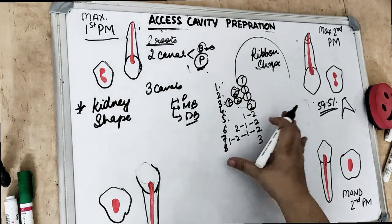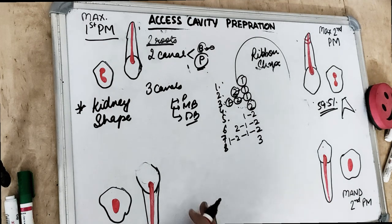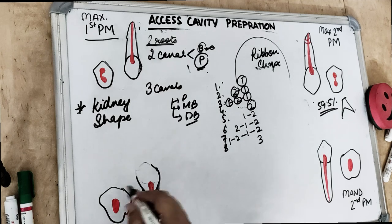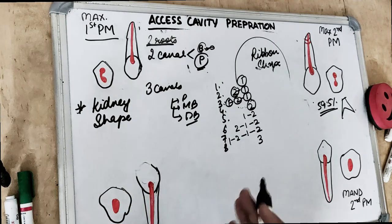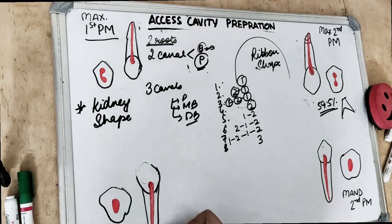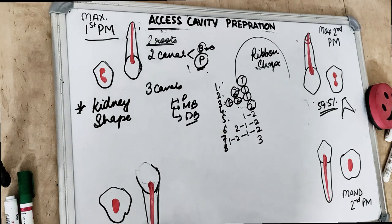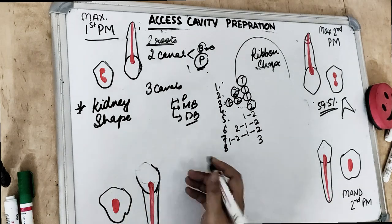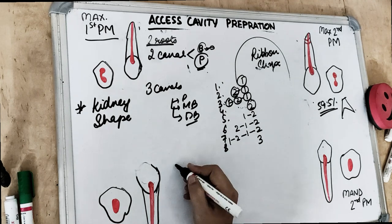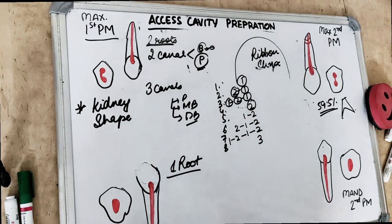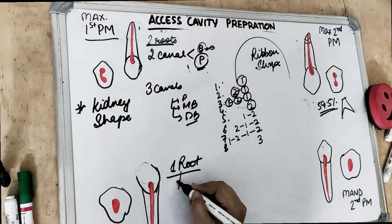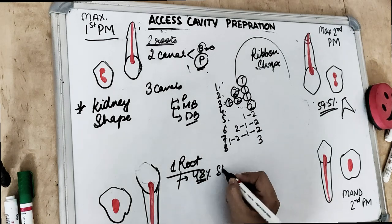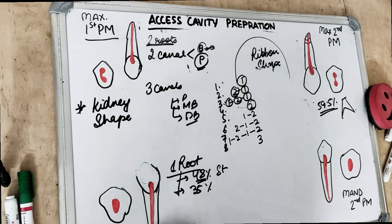Coming to the mandibular first premolar — it is ovoid in shape. The access cavity is ovoid buccolingually. There is usually one short conical root, but the root may bifurcate, with furcation present in the apical area. Bifurcated roots are most commonly seen in the mandibular first premolar, second most commonly in the mandibular incisors. There are 48% chances the root is a straight line and 35% chances there is a distal curvature in the root.